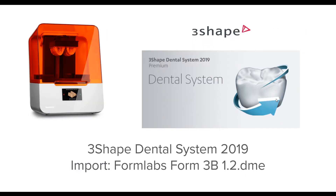Before we get started, a couple quick notes. In this demo I'll be using 3Shape Dental System 2019. Some of the older versions are generally pretty similar, but something really important for removable dies is that in 2019 they enabled the ability to adjust friction of removable dies dependent on the size of the die. You will get better consistency between anterior and posterior dies using 3Shape 2019 or newer. So if you're using 2017 or 2018, consider upgrading if you're having die fitment issues from small to large.